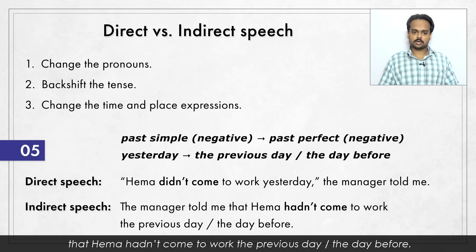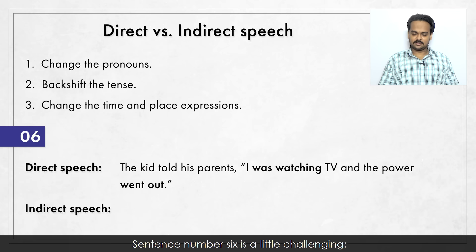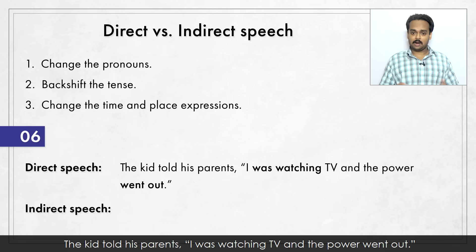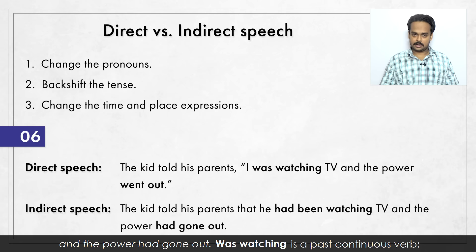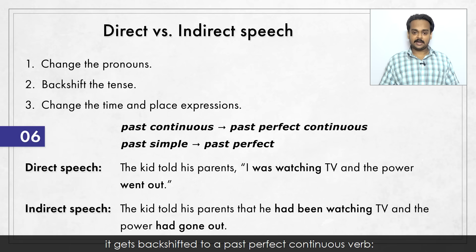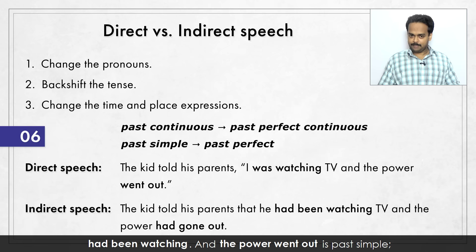Sentence number six is a little challenging. The kid told his parents, "I was watching TV and the power went out." The kid told his parents that he had been watching TV and the power had gone out. "Was watching" is a past continuous verb – it gets backshifted to a past perfect continuous verb – "had been watching". And "the power went out" is past simple – it becomes "the power had gone out".